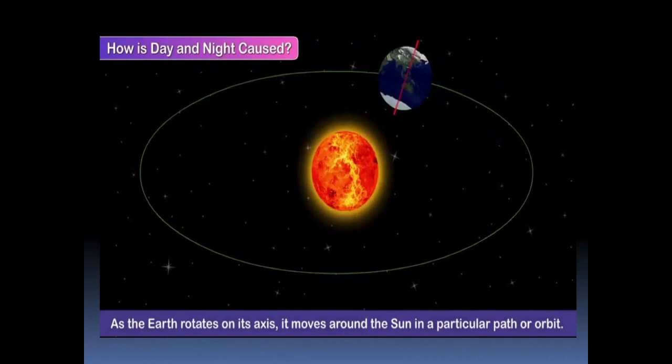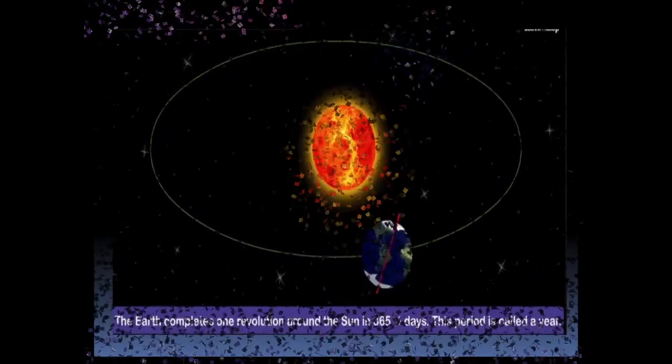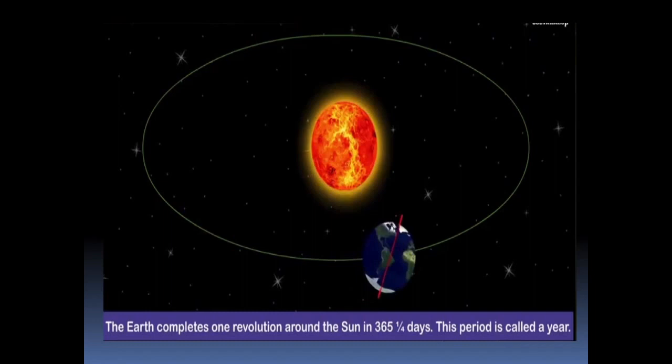As the earth rotates on its axis, it moves around the sun in a particular path or orbit. The earth completes one revolution around the sun in 365 and 1/4 days. This period is called a year.